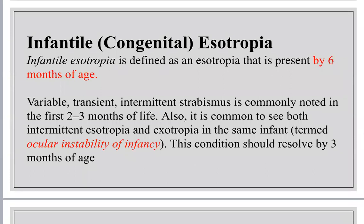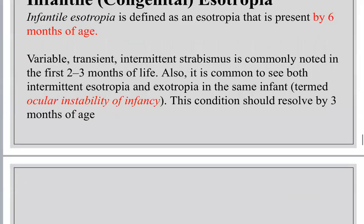Let's talk about the most important types. I have infantile esotropia and accommodative esotropia, which are the most important ones. Number one is infantile esotropia. There are two important issues: the definition of congenital or infantile, which is present or apparent before the age of six months, and ocular instability.